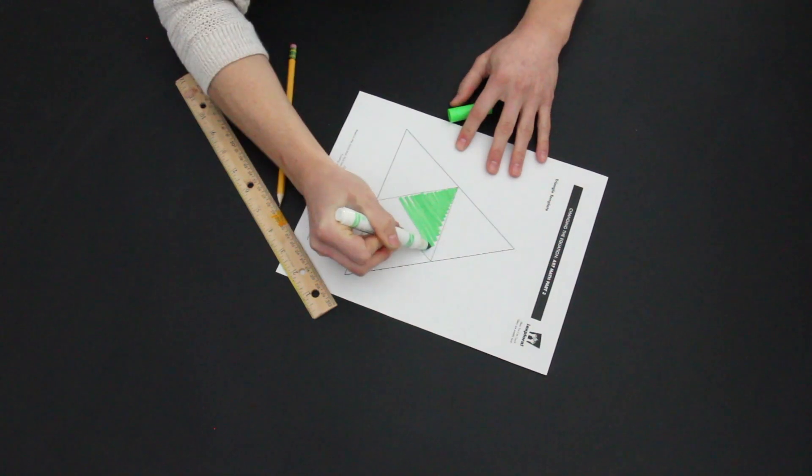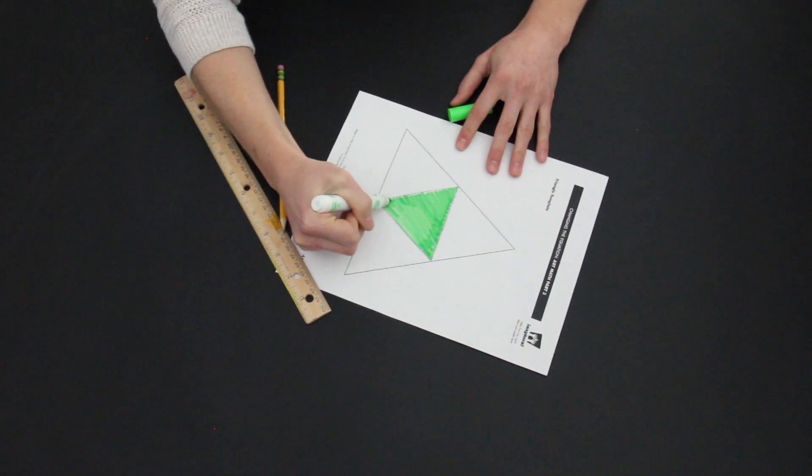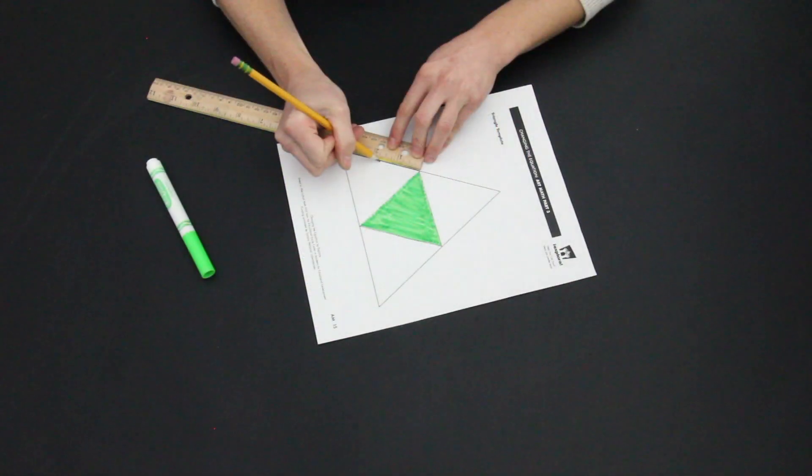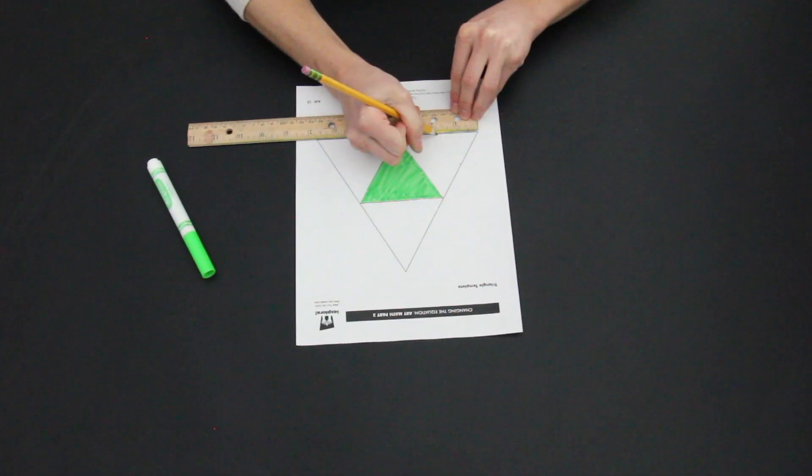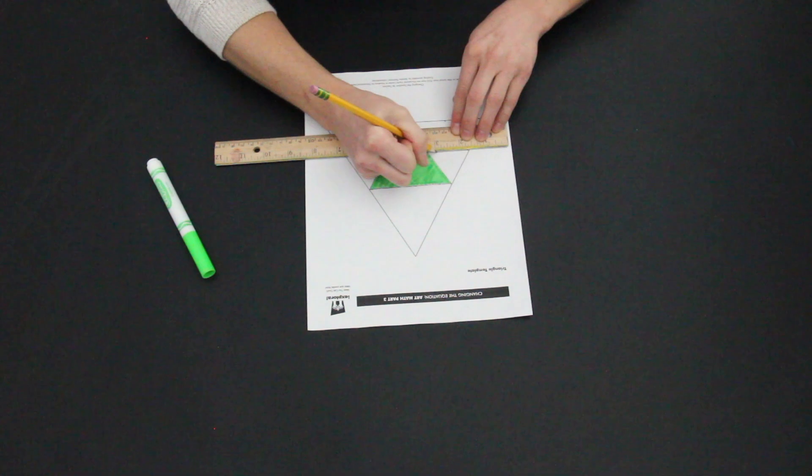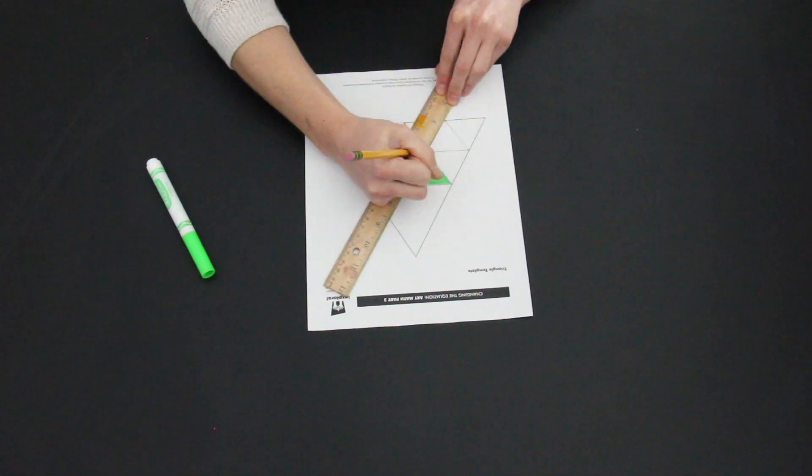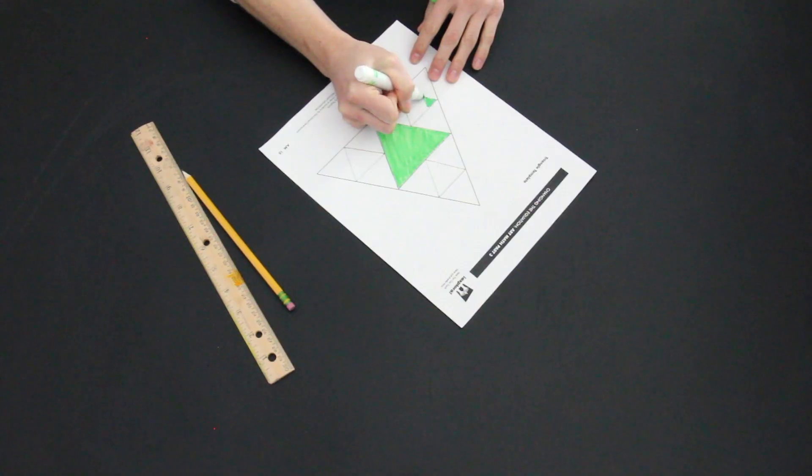This triangle should be upside down. Go ahead and color it in however you'd like. For the three remaining triangles, find the midpoints and draw in the downward facing triangles for each one. Color these too.